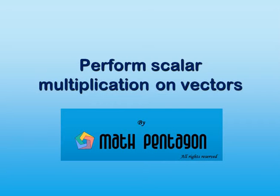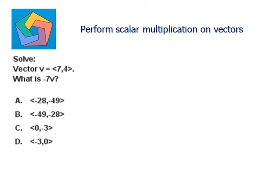Hi! Today we are going to learn about performing scalar multiplication on vectors. Let's look at a problem. Solve: vector v equals 7, 4. What is negative 7 times v?